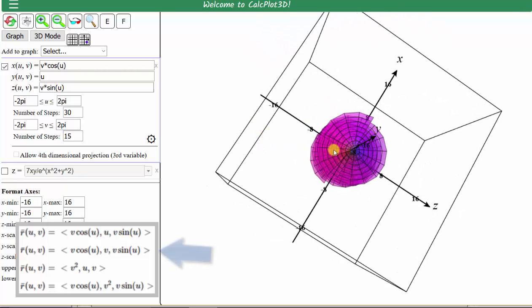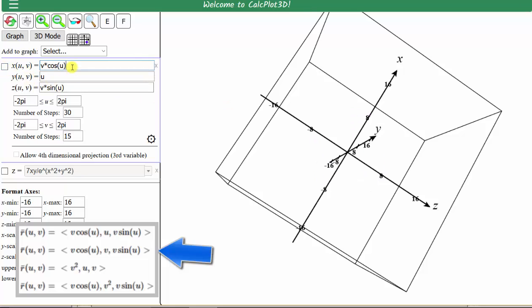Let's graph our next surface. So we'll go back over to the parametric equations. Let's uncheck this so it's no longer graphed, and we'll enter our new parametric equations. Notice for the second parametric surface, x is still v times cosine u, and z is still v times sine u, but now y is equal to v. And now let's click the box and take a look at the graph.